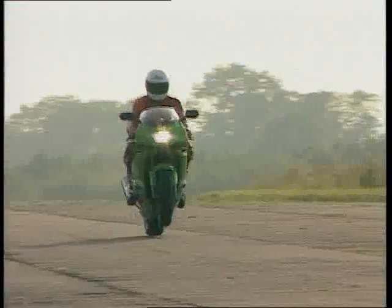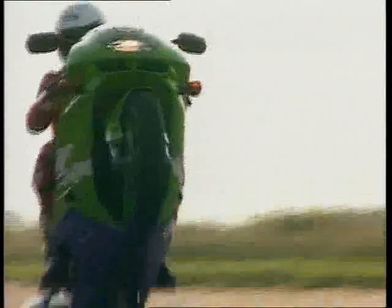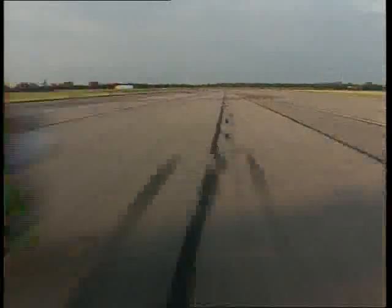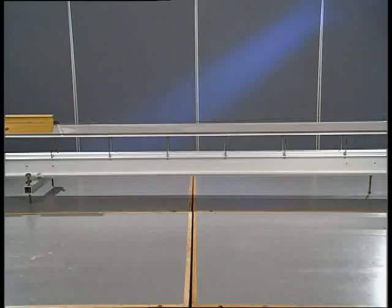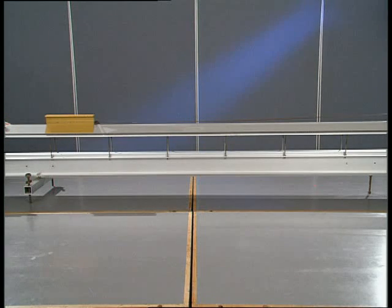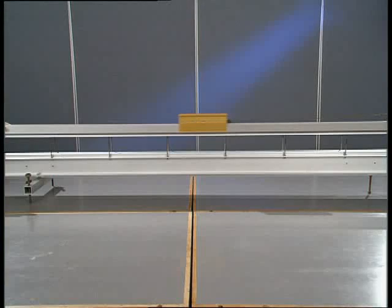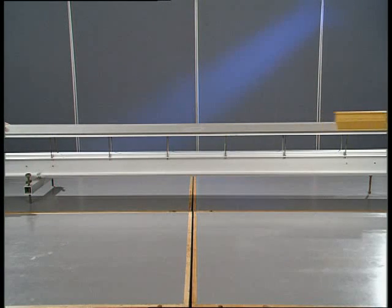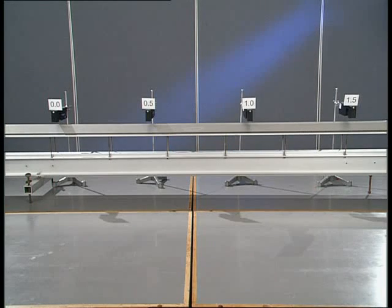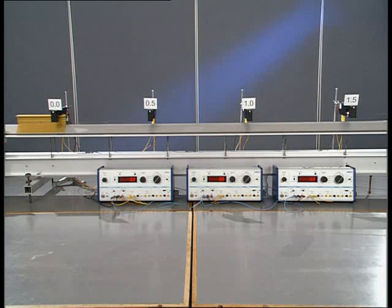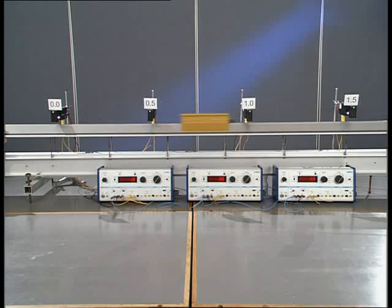When the speed of an object increases, we say it accelerates. To investigate acceleration, a lightweight glider is pulled along a linear air track. It's attached to a tape that's weighted at one end. As the mass falls, it pulls the vehicle forward. To analyze the change in speed, light gates attached to electronic timers are placed at half meter intervals.